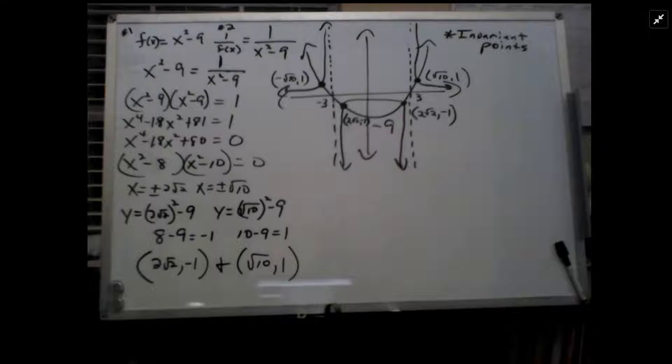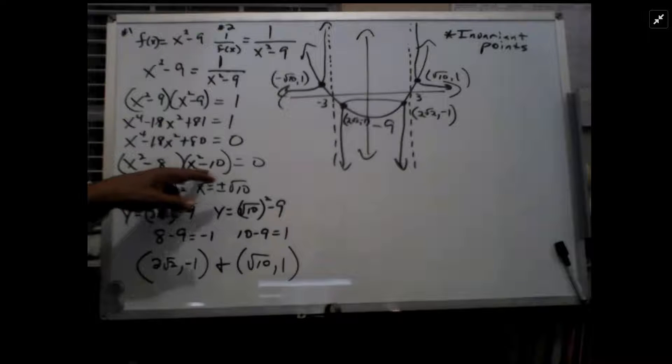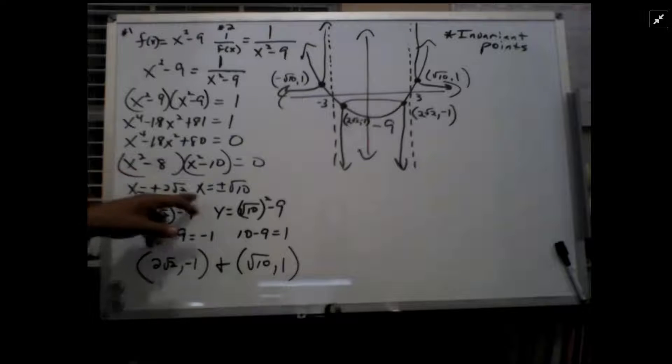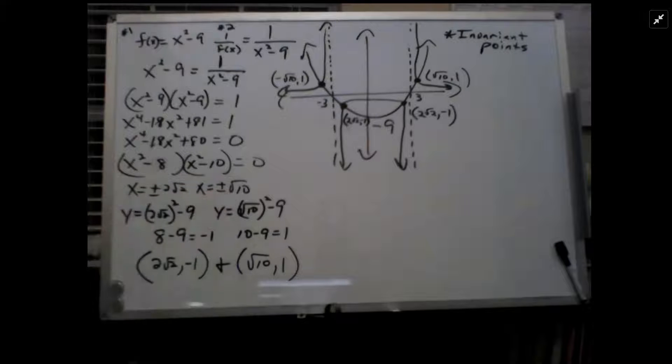Factoring the trinomial gives me x squared minus 8 times x squared minus 10 equals 0. That means x equals plus minus 2 radical 2, which is radical 8 by the way, and x equals plus minus radical 10.